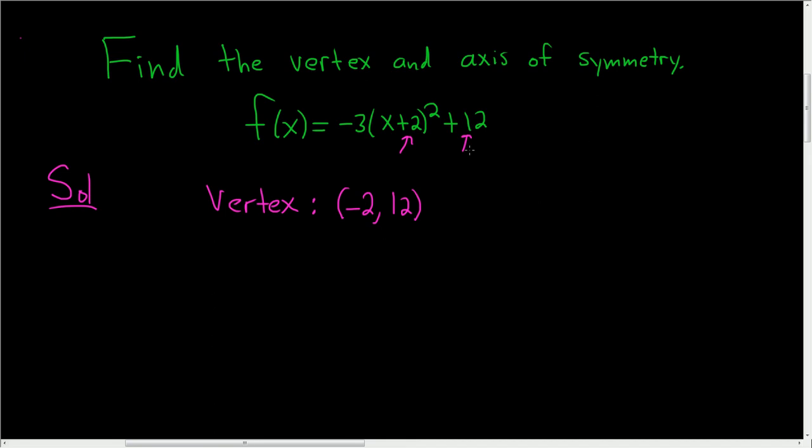So switch it, keep it, switch it, keep it. And to find the axis, that's the line x equals, and it's whatever's here. So x equals negative 2. And that's it.